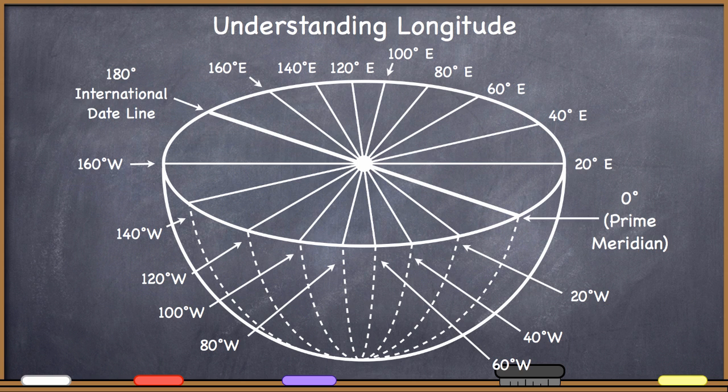But in this example, you can see that longitude is based on an angle going from zero, the prime meridian, all the way to the other side of the planet called the International Date Line. So the maximum value of longitude you can have is 180 degrees. We measure 180 degrees east and 180 degrees west of the prime meridian.